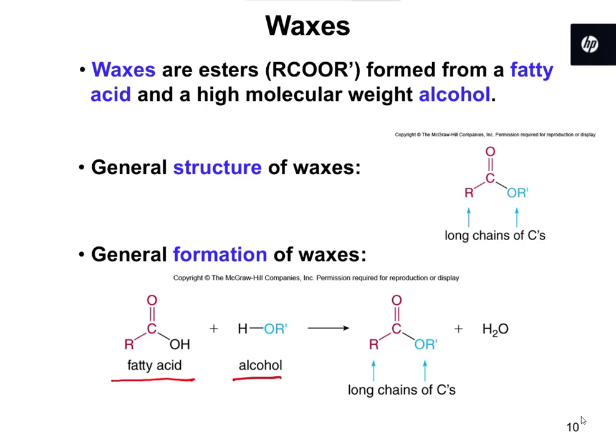Back in Chapter 13, we said that a carboxylic acid plus an alcohol makes an ester in water. For a wax, we're saying the exact same thing, except instead of saying carboxylic acid, we're going to say a fatty acid, which is really just a large carboxylic acid. And then it's still an alcohol, but in this case it's a high molecular weight alcohol. So it's still the same principle, just a different name when we talk about waxes.